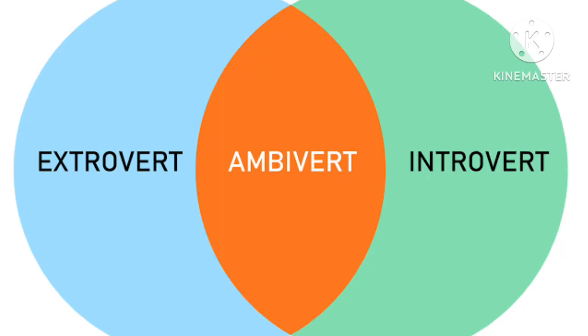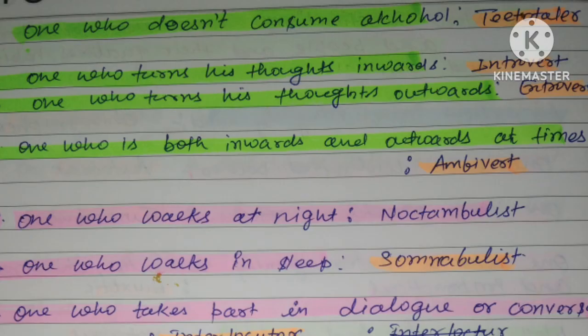For people who are both introverted and extroverted at times, we use the term ambivert. An ambivert is a person whose thoughts can be both inward and outward. The root 'ambi' means both. Similarly, 'ambidexterous' — which we saw in the previous class — is a person who is skillful in using both hands equally.